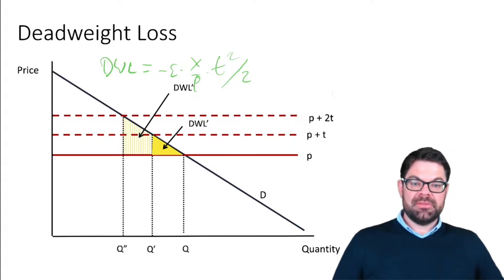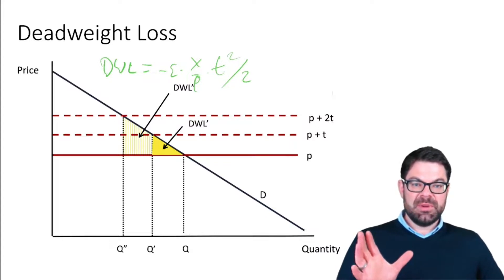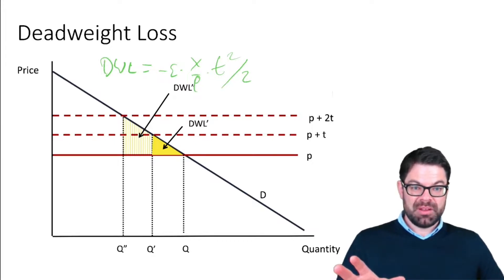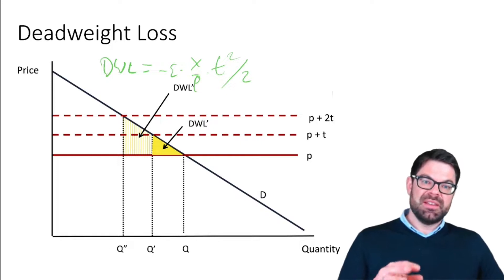Instead of having a tax t, suppose we double the tax. What's going to happen is that the deadweight loss quadruples. That's what the proportionality with the square tells us.